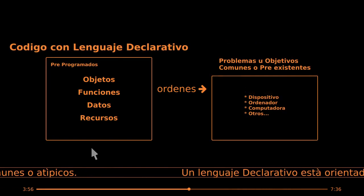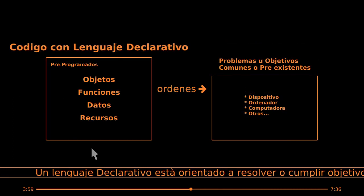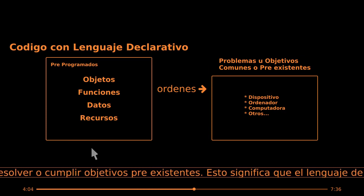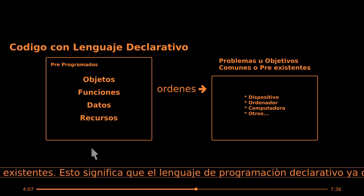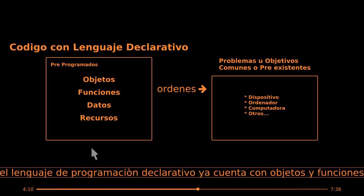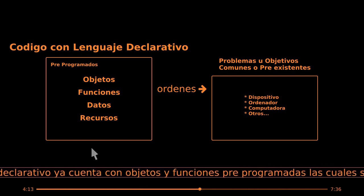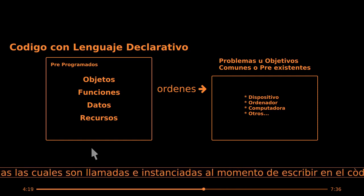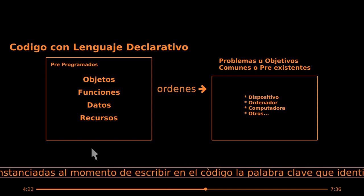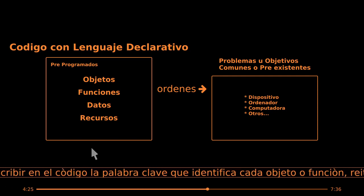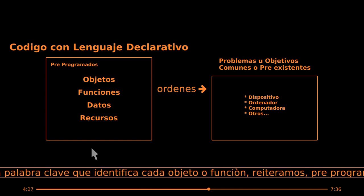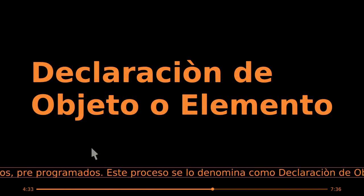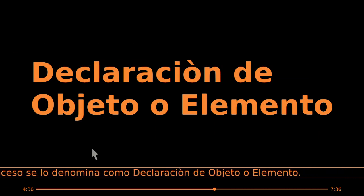Un lenguaje declarativo está orientado a resolver o cumplir objetivos preexistentes. Esto significa que el lenguaje de programación declarativo ya cuenta con objetos y funciones preprogramadas, las cuales son llamadas e instanciadas al momento de escribir en el código la palabra clave que identifica cada objeto o función. Reiteramos: preprogramados. Este proceso se lo denomina como declaración de objeto o elemento.